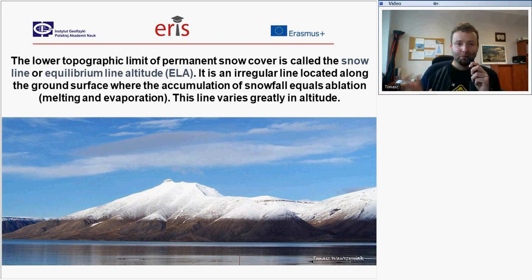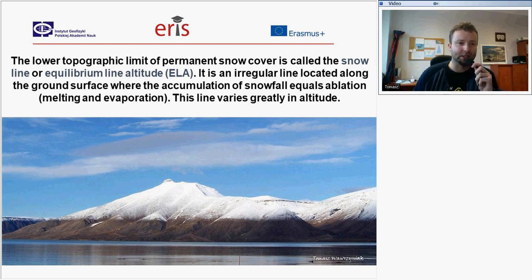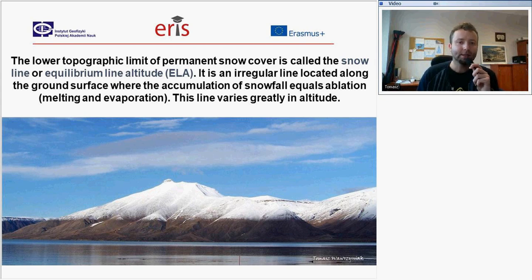The lower topographic limit of permanent snow cover is called the snow line or equilibrium line altitude, ELA, which is an irregular line located along the ground surface where the accumulation of snowfall equals ablation. The snow line varies greatly in altitude.